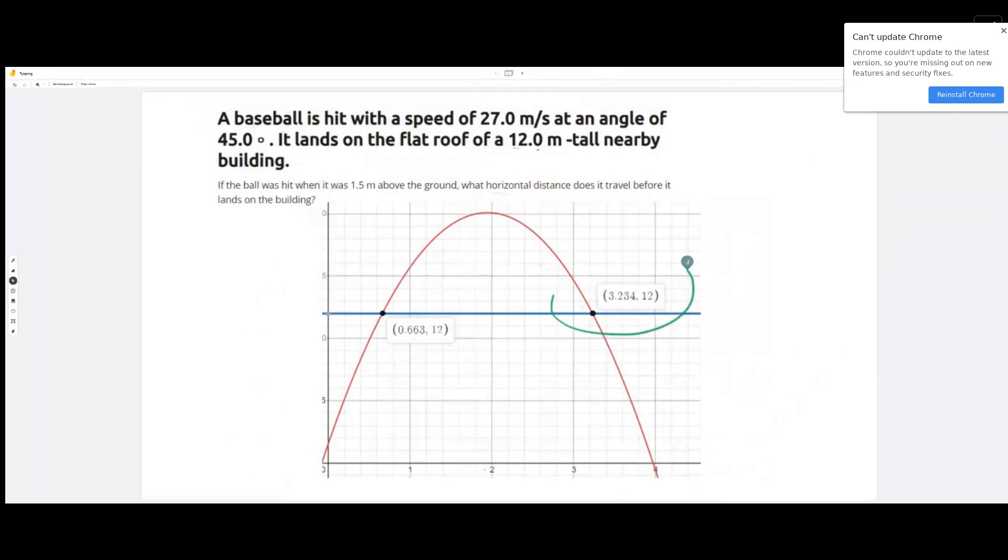Now clearly we are to analyze this point. We're supposed to use this point here, because if the ball is landing on top of a roof, it cannot land on a roof if it's still on its way up. It has to be on its way down for it to land on top of the roof of a building.